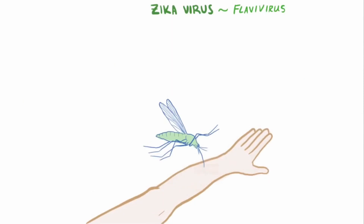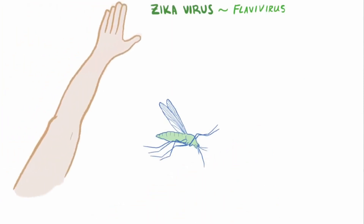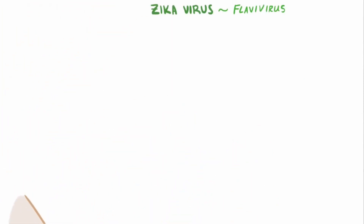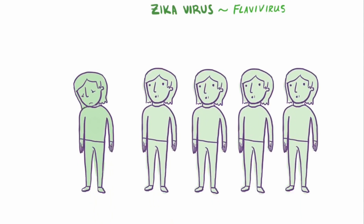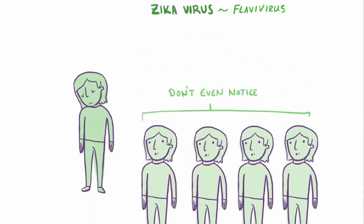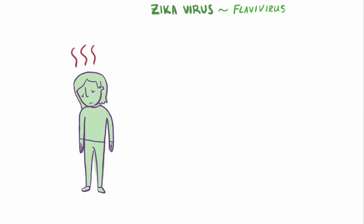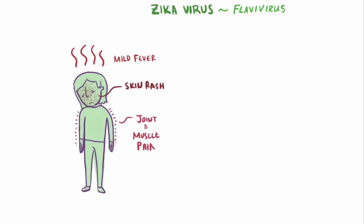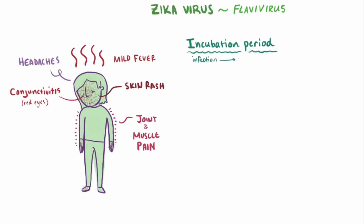As bleak as all that sounds, our immune system is actually pretty good at fighting off Zika virus, and only one in five get sick from infection — often the others won't even notice they've been infected. Common symptoms when patients have them are mild fever and skin rash, but some also experience muscle and joint pain, headaches, and conjunctivitis, or red eyes. The incubation period, or time from infection to symptoms, isn't known exactly, but it's thought to be from a few days to a week.